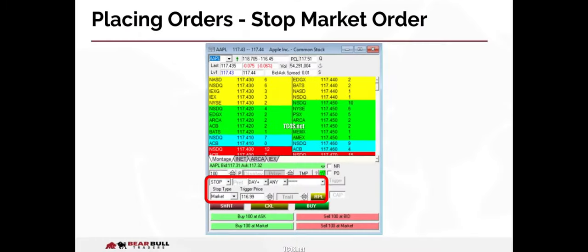As important as buying or selling a stock to enter a long or short position is the ability to exit a trade in order to manage risk. This can be done using a stop order. The most common type of stop order is the stop market order. Stop market orders are used to exit trades because it is guaranteed that these orders will be executed, whereas a stop limit could theoretically be passed over and fail to execute. To place a stop market order, choose stop in the route field and choose market as the stop type.